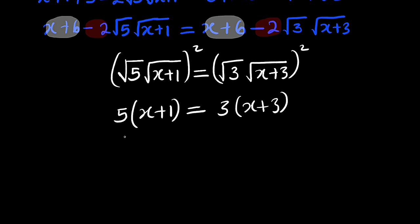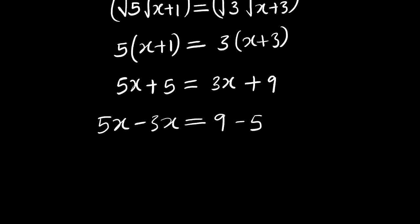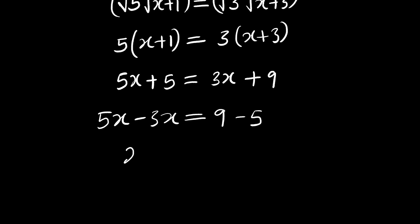So let's expand the left hand side, we have 5 times x is 5x plus 5 times 1 is 5. This is equal to 3 times x is 3x. And 3 times 3 is 9. Let me bring 3x to the left hand side. So we have 5x minus 3x. This is equal to 9 minus 5. 5x minus 3x is 2x. This is equal to 9 minus 5 is 4.